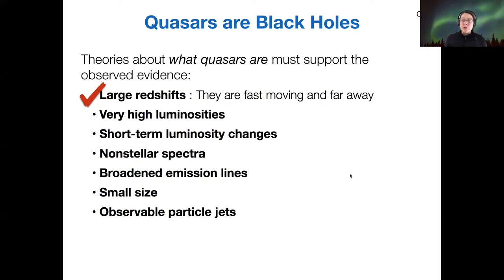The first piece of evidence is the large redshifts, which supports the idea that they are fast moving and far away from us. We've already got that under control. That doesn't really tell us what they are. It just tells us that they are far away.